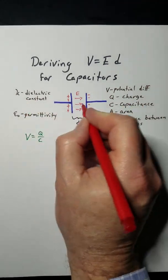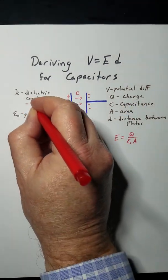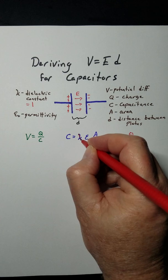Now for this, we're going to say that there's a vacuum in there, so the dielectric constant is 1, so that term falls out.